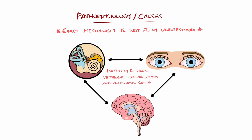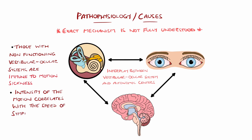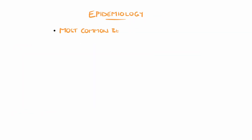People who have non-functioning vestibular ocular systems are immune to motion sickness, and the intensity of the motion correlates with the speed of symptom onset. It is most common in ages between 2 and 12 years, and is more common in females than in males.